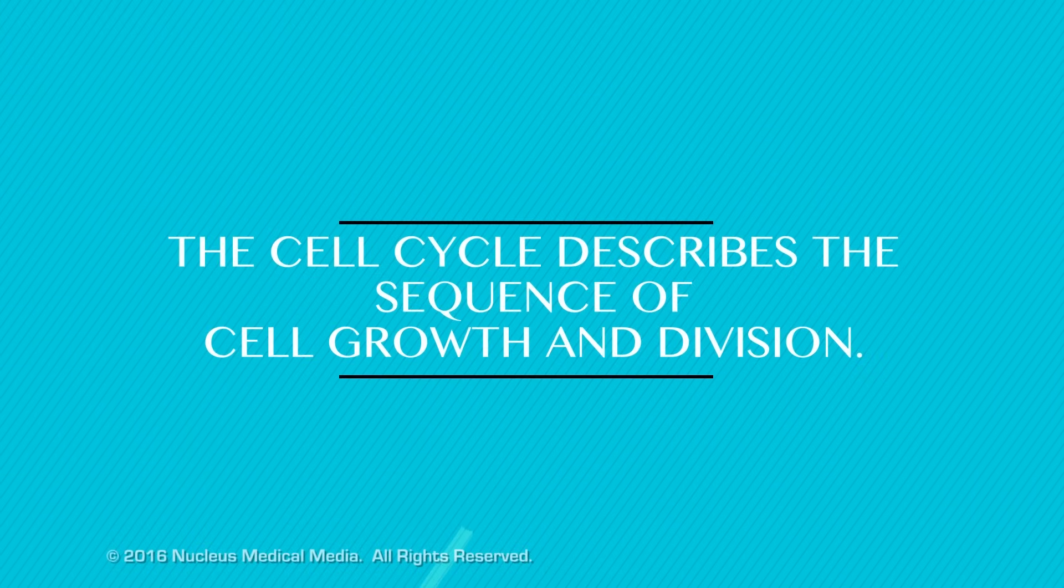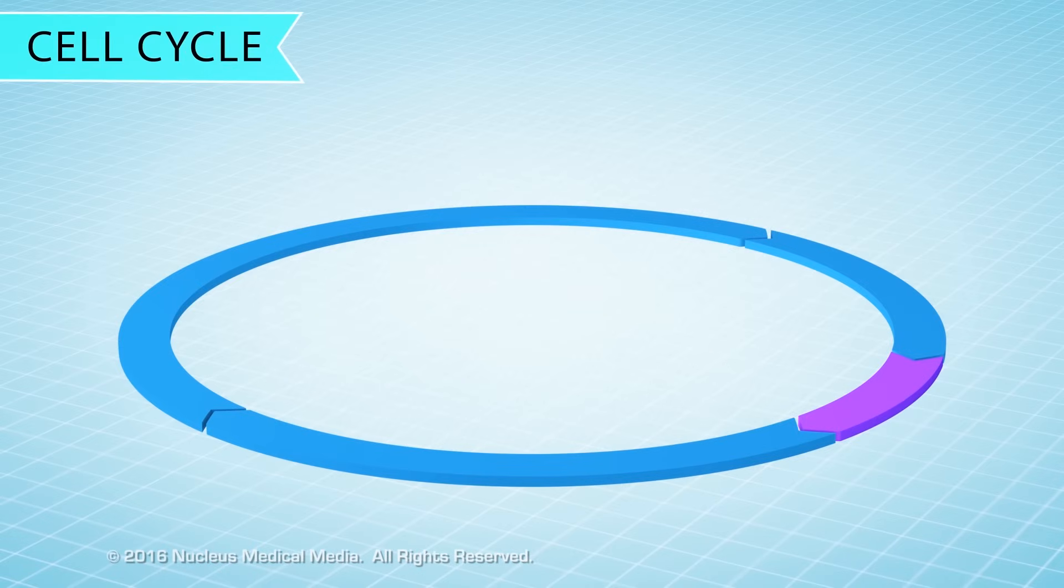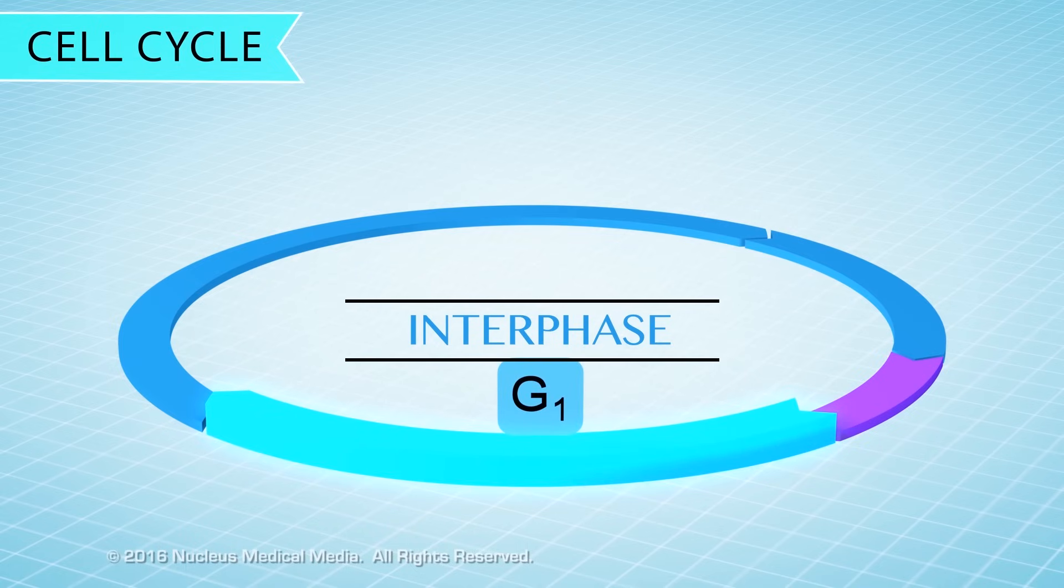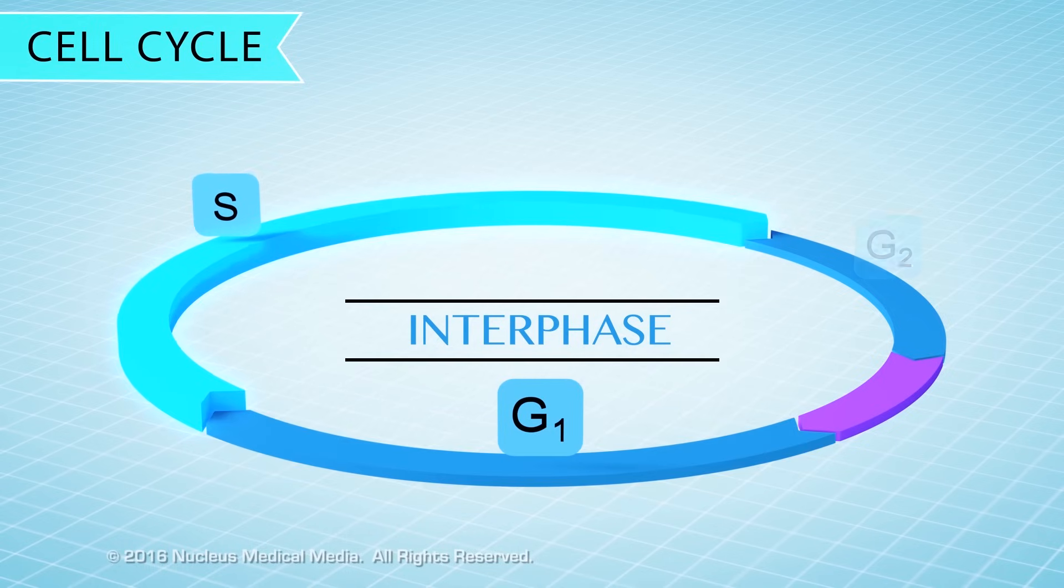The cell cycle describes the sequence of cell growth and division. A cell spends most of its life in a state called interphase. Interphase has three phases: the G1, S, and G2 phases.